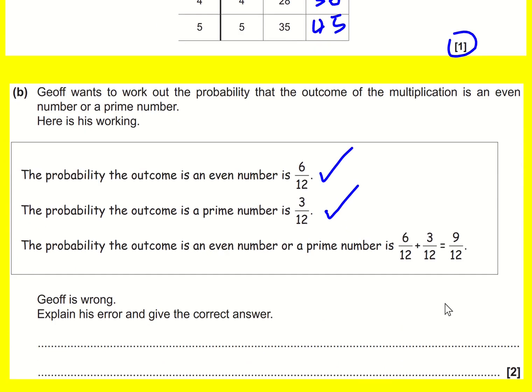So the answer is that even and prime are not mutually exclusive events. Or I'm just going to write 'are not mutually exclusive.'